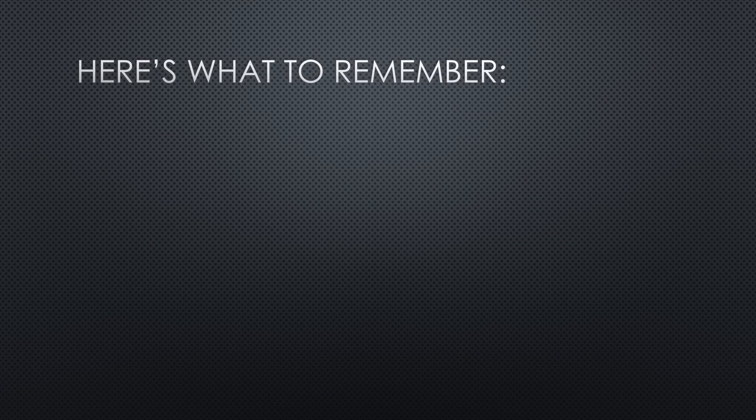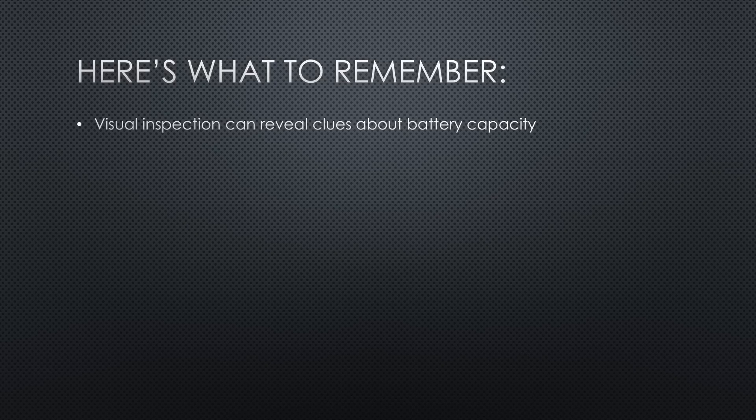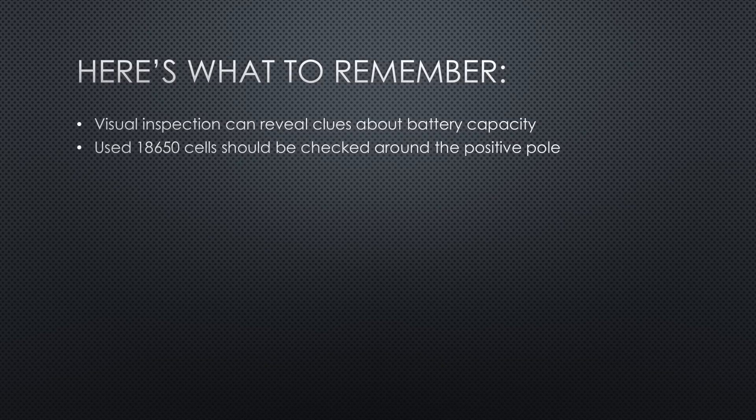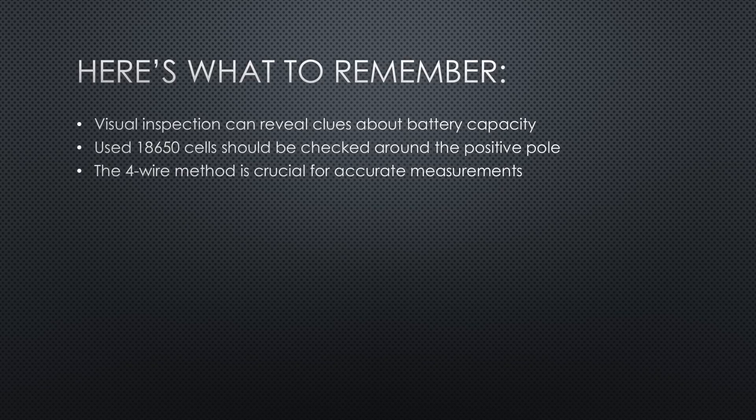Here's what to remember. Visual inspection, especially checking the weight of a new cell, can reveal clues about its capacity. Used 18650 cells should be checked around a positive pole, as mechanical damage in this area can be dangerous. The 4-wire method is crucial for accurate measurements, and we now understand why and how to use it.